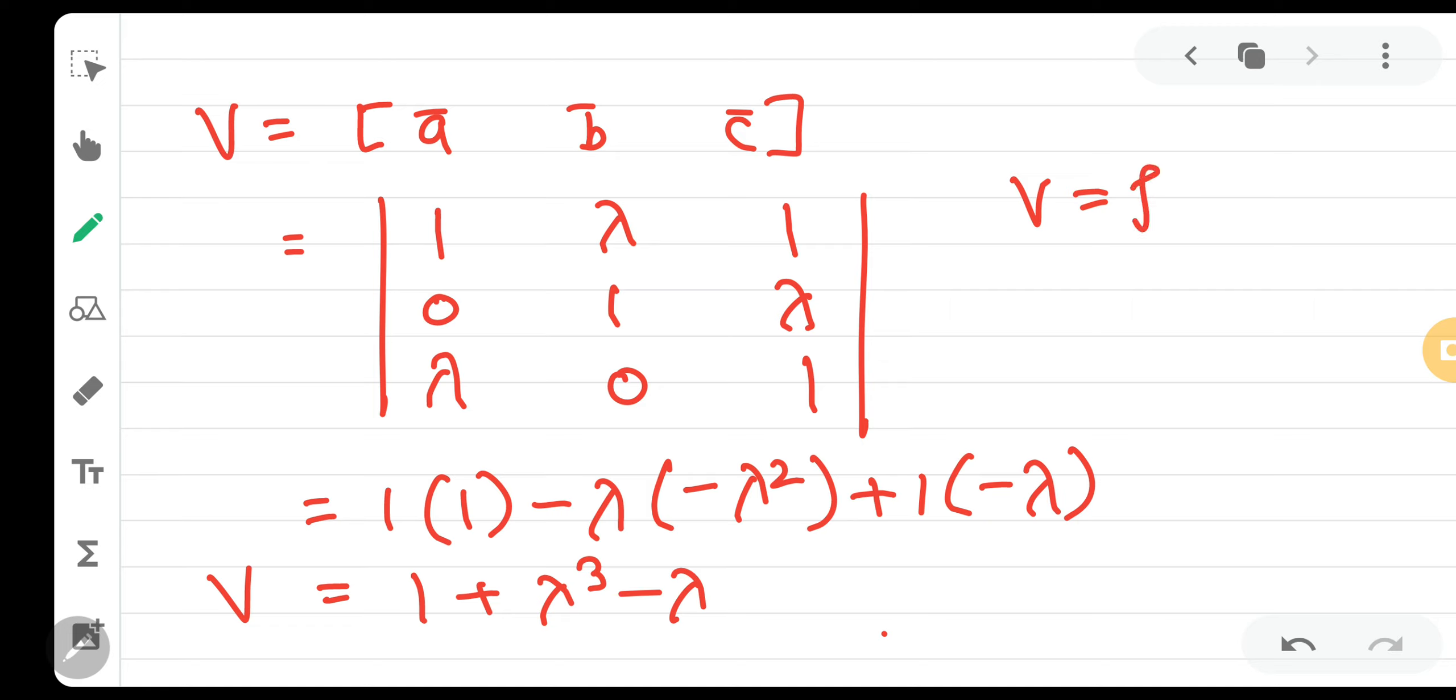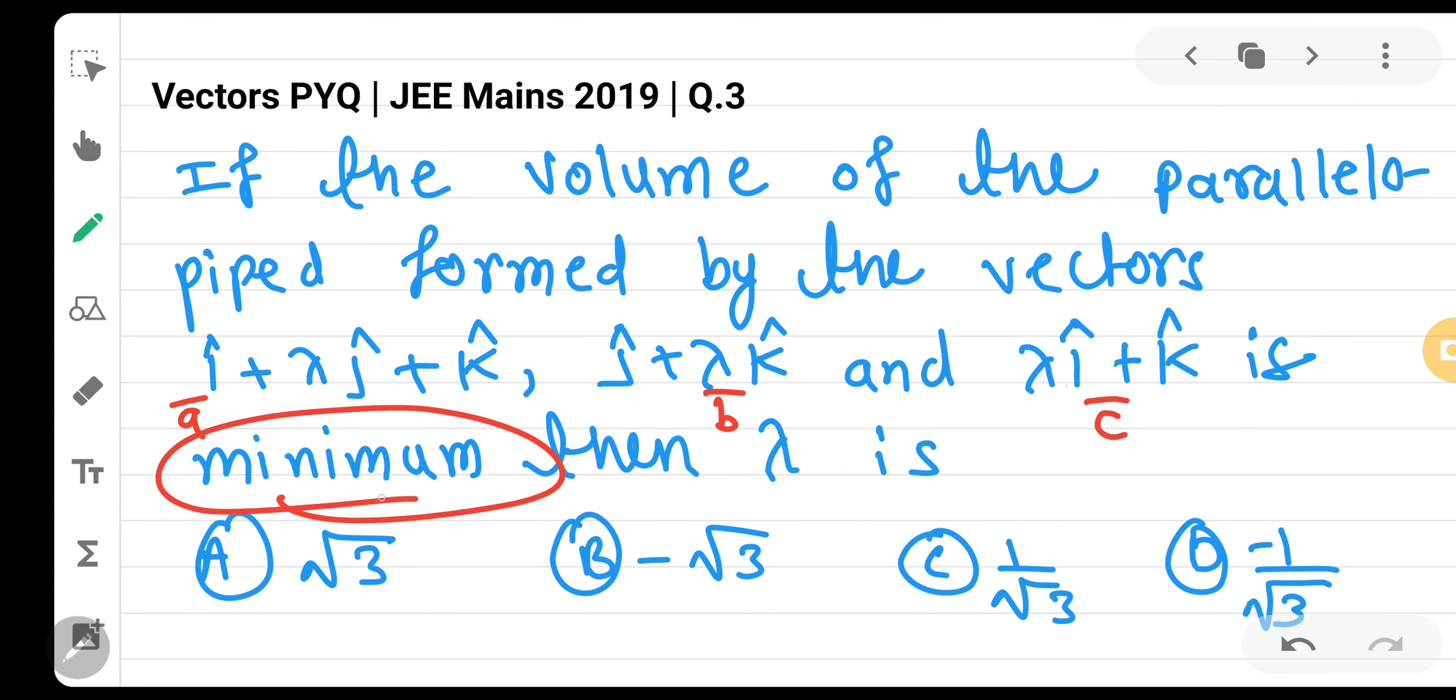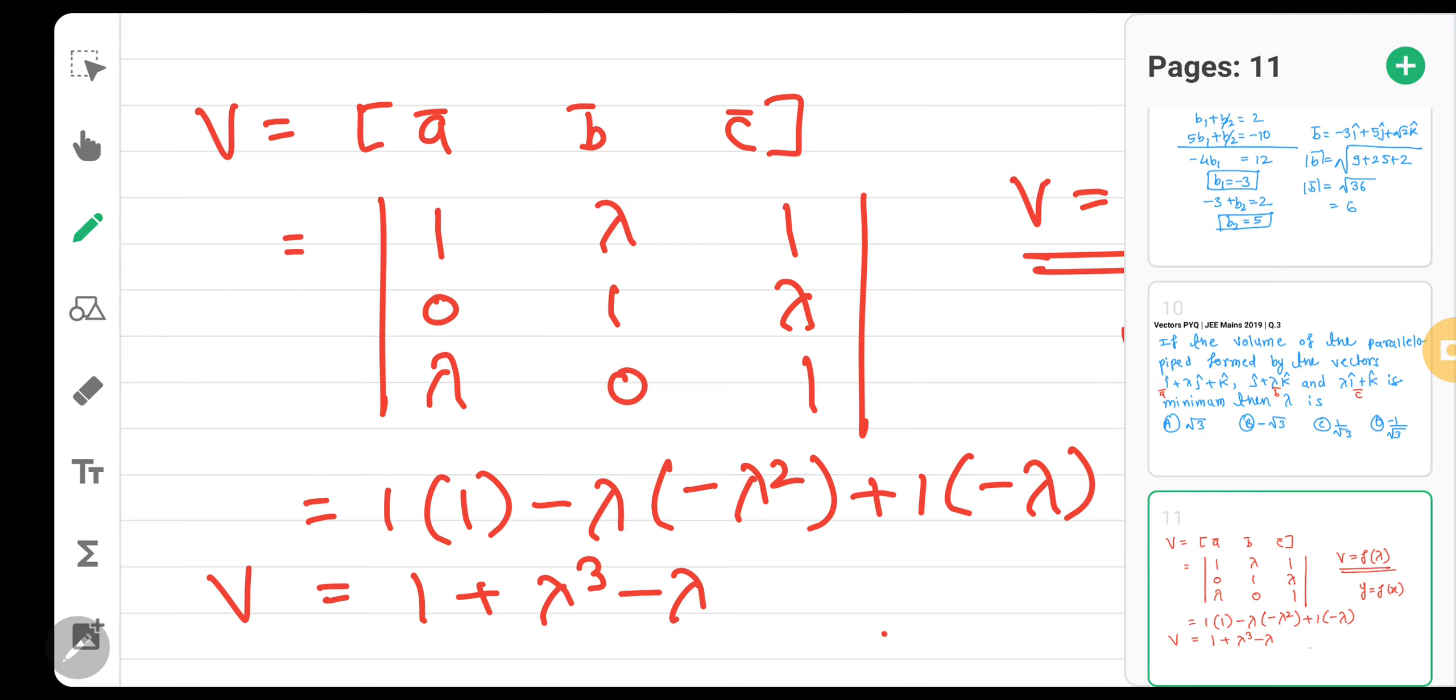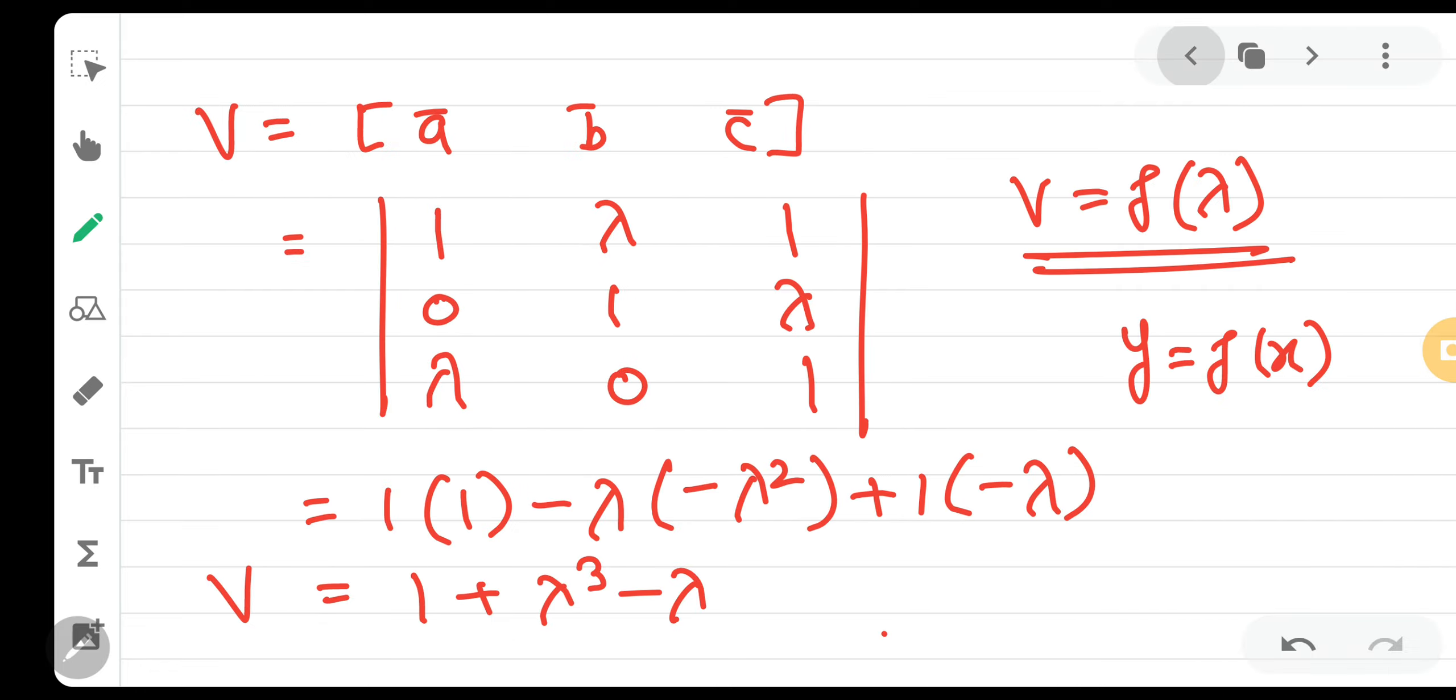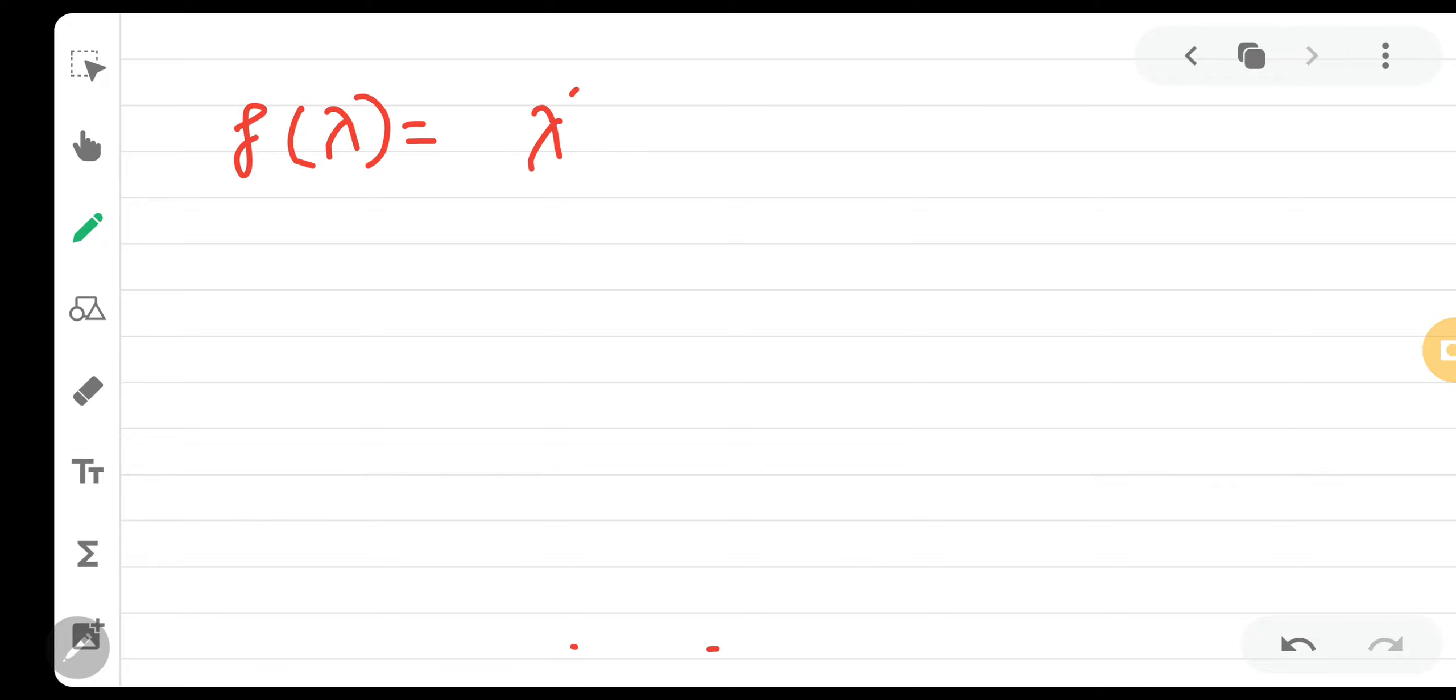So volume is function of lambda. You can see here, volume is a function of lambda, just like y is a function of x. So volume is a function of lambda. And what do you want to do? Minimize. So f of lambda is lambda cubed minus lambda plus 1. So here we will apply derivatives, application of derivatives.